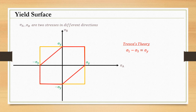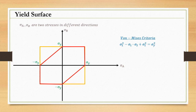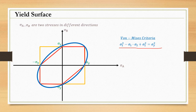For Von Mises, the yield criterion in 2D is: Sigma_1² − Sigma_1·Sigma_2 + Sigma_2² = Sigma_Y². This is the equation of an ellipse. When plotted, the Von Mises yield surface is an ellipse that circumscribes the Tresca hexagon, touching it at several critical points. There are small regions where Tresca is over-safe compared to Von Mises, but overall both theories are quite similar in nature.